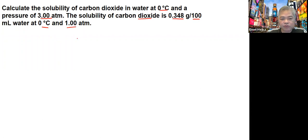We're going to apply Henry's Law, where the gas solubility is directly proportional to the pressure. So we can write this as c1 over p1 equals c2 over p2. The c1 that we have here is 0.348 grams per 100...